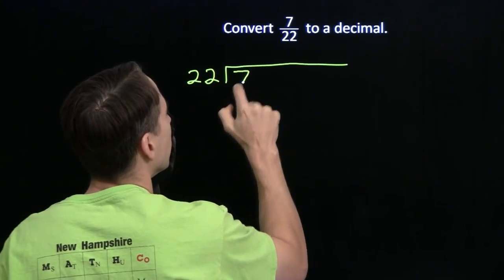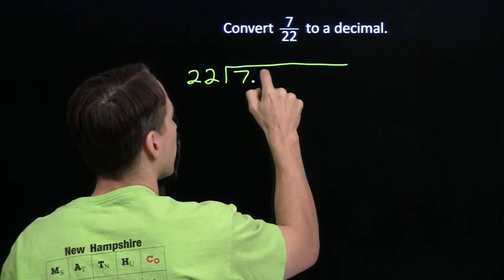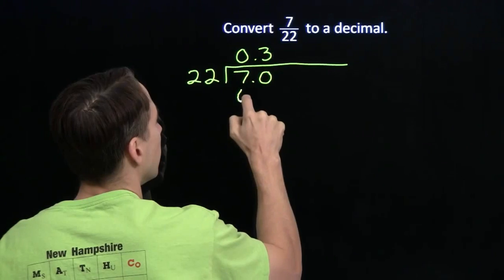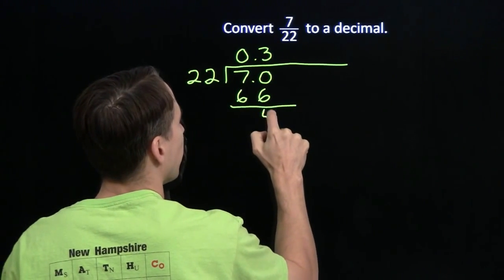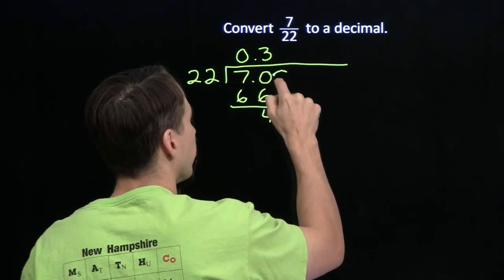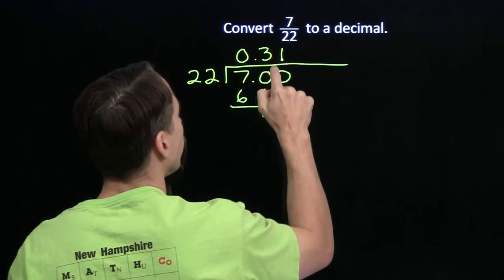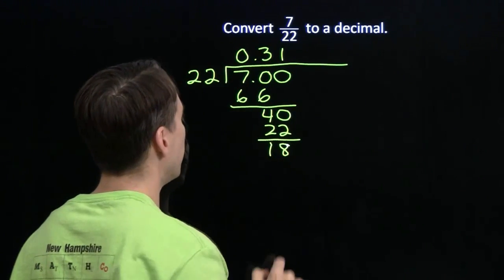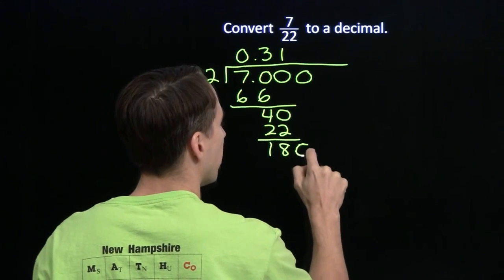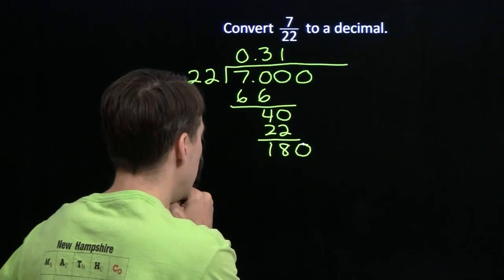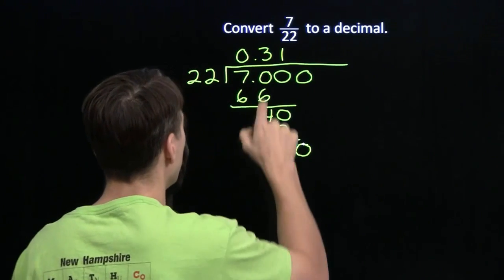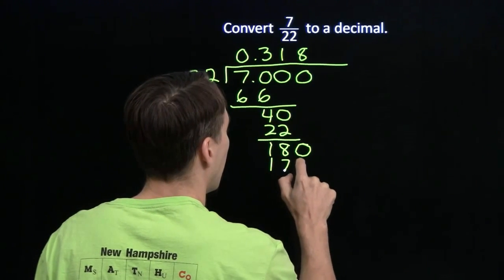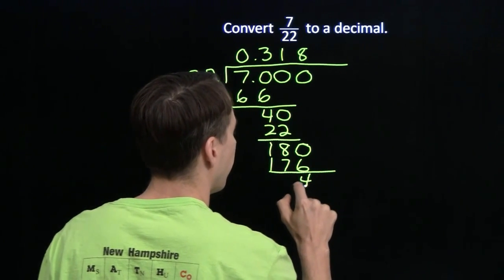We're going to divide 22 into 7. Well, 22 doesn't go into 7, so again we're going to go to our tenths. 22 into 70 — that's going to go 3 times. 3 times 22 is 66, so we have 4 left over. We're going to have to bring down hundreds, because 22 doesn't go into 4. 22 into 40 — that'll go once. 1 times 22 gives us 18 left over. 22 doesn't go into 18, so we bring down another 0. 22 into 180 — 8 times 22 is 176, so we have 4 left over.